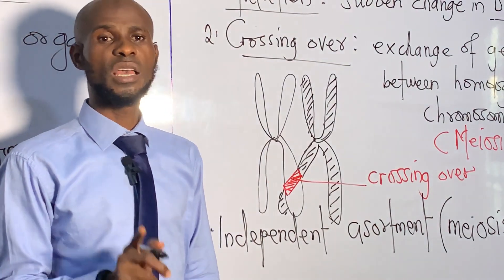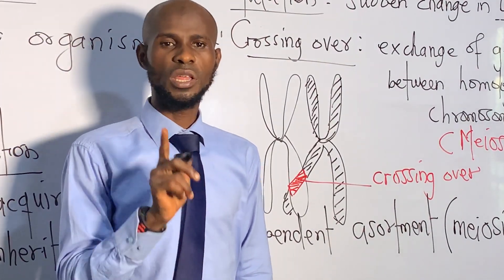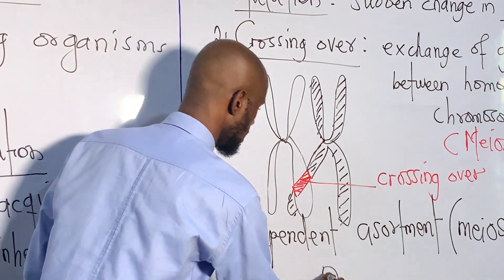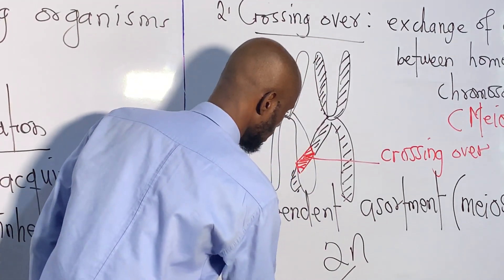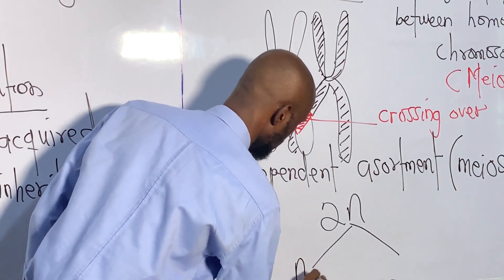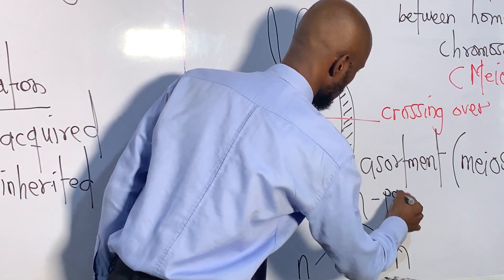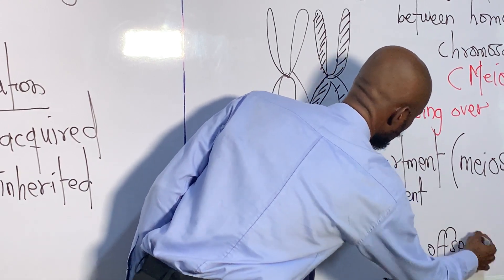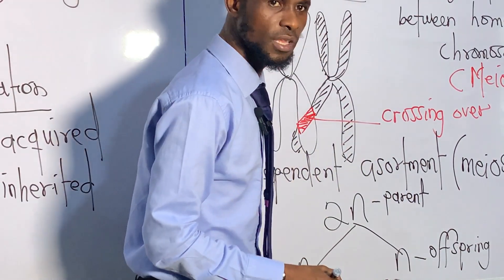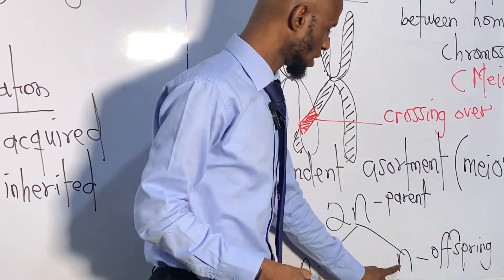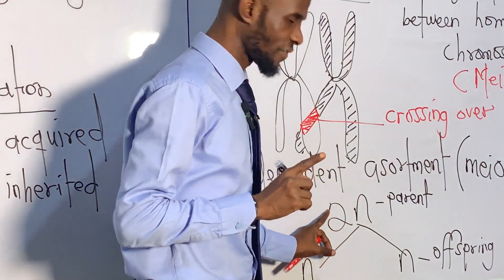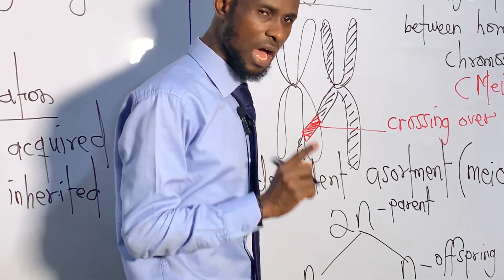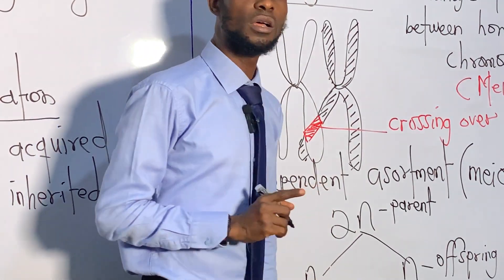Don't forget that meiosis is a cell division in which a parent gives rise to half the number of chromosomes. The parent has 2n chromosomes, and each offspring receives n chromosomes — that is, half the number of chromosomes of the parent.